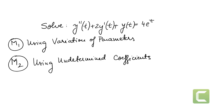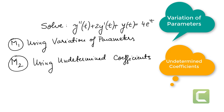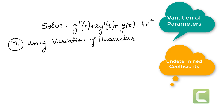Let's solve the second order differential equation y'' + 2y' + y = 4e^t using variation of parameters and then using undetermined coefficients. Let's start by using the variation of parameters method.